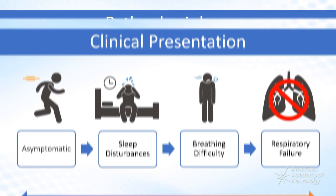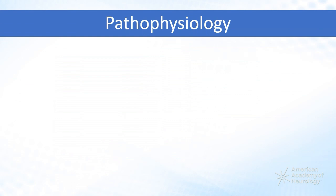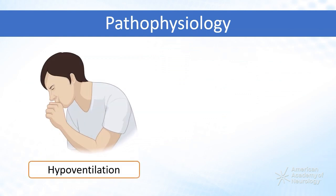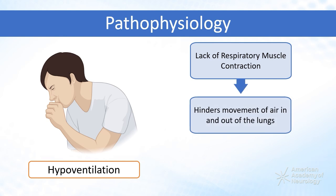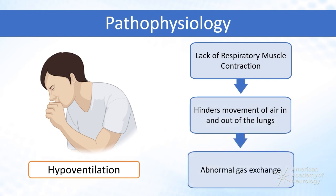An important concept is that the primary problem caused by neuromuscular respiratory weakness is hypoventilation. The lack of adequate respiratory muscle contraction hinders the physical movement of air in and out of the lungs, resulting in abnormal gas exchange and a restrictive physiology.